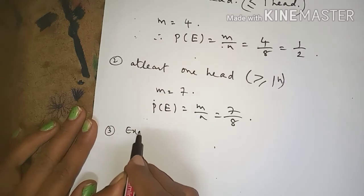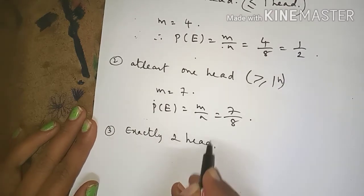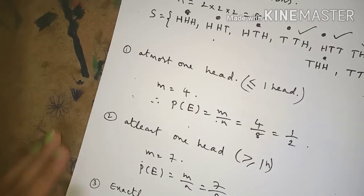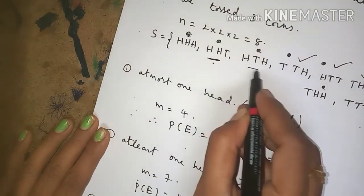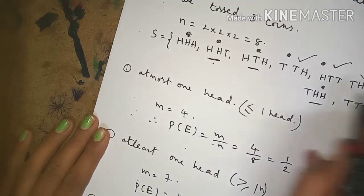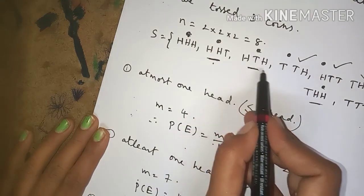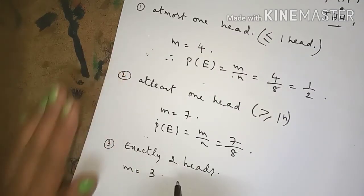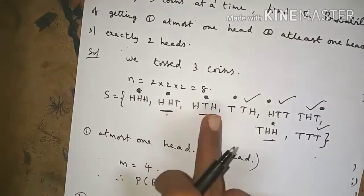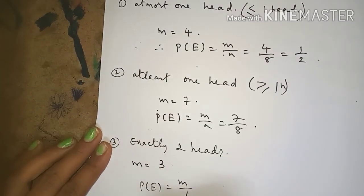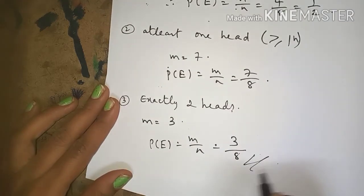The third part: exactly 2 heads. Counting from the sample space, exactly 2 heads occurs in HHT, HTH, and THH — so m equals 3. Therefore P(E) equals m by n, which is 3 by 8. That is the answer.